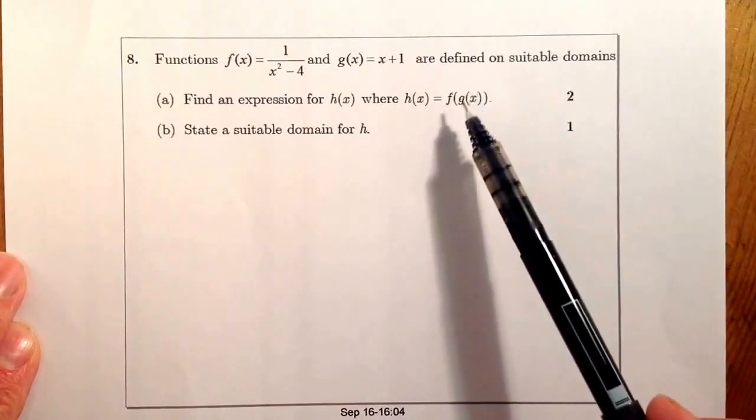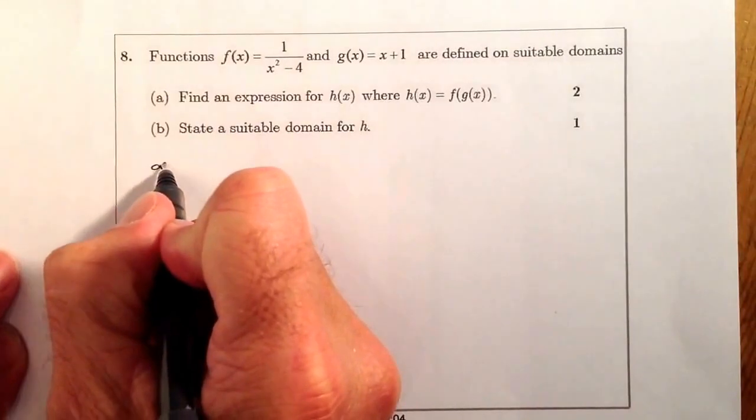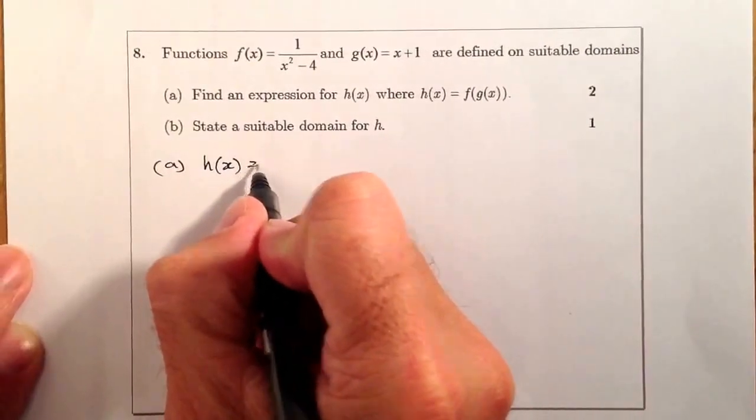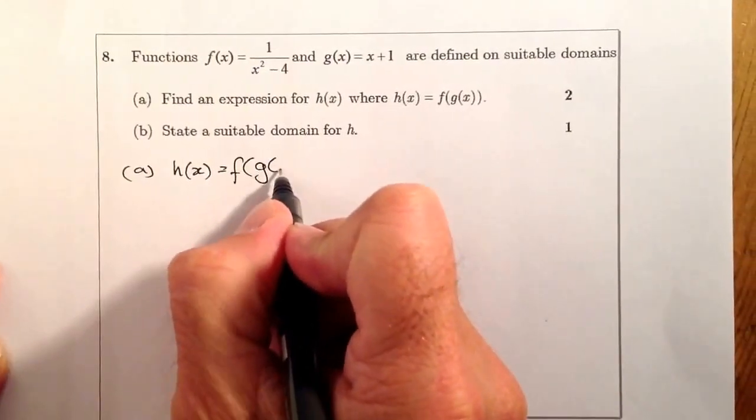Let's go and find an expression for this. For part A, h(x) is going to be equal to, just copying this down here, f of g of x.